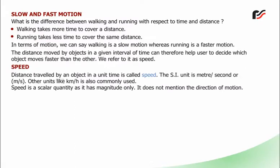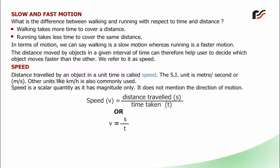Speed: Distance travelled by an object in a unit time is called speed. The SI unit is metre per second (m/s). Other units like kilometre per hour are also commonly used. Speed is a scalar quantity as it has magnitude only — it does not mention the direction of motion. Speed equals distance travelled divided by time taken: v = s/t.